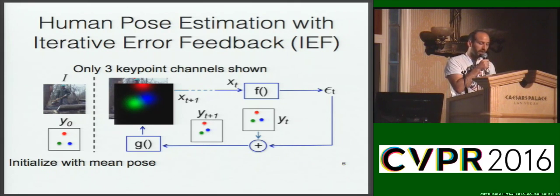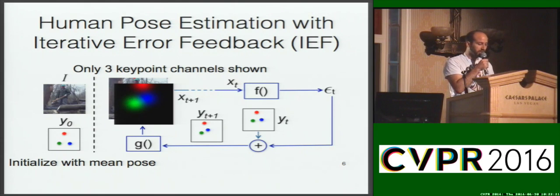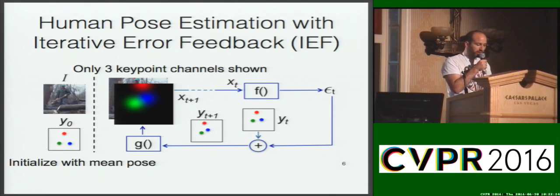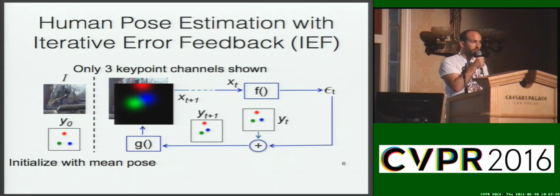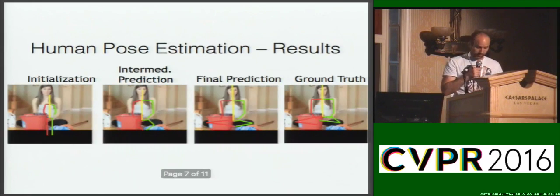A second module, G, renders the keypoints. We render a pose by placing a Gaussian around the keypoints.